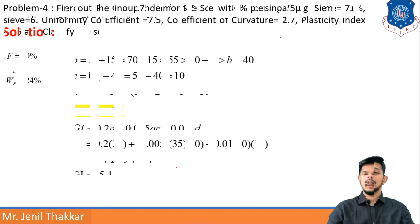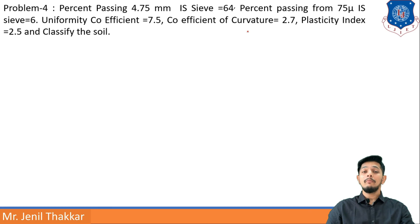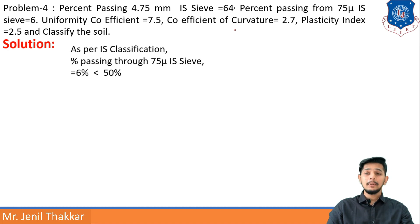Problem 4: Percent passing 4.75 mm IS sieve = 64%, percent passing from 75 micron IS sieve = 6%. Uniformity coefficient CU = 7.5, CC coefficient of curvature = 2.7, plasticity index = 2.5. Classify the soil. It is very simple problem but it needs understanding.